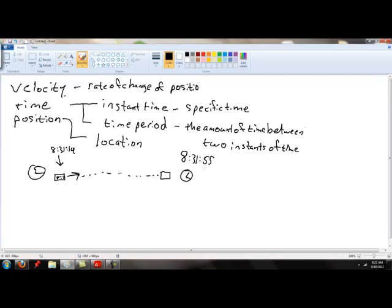To find out, oh by the way, these two times that are listed here, this time and this time, these are instant times. They're specific times. To find out the time period, or the amount of time between these two events, all we do is we take the final time minus the initial time, and that will give us the time period.